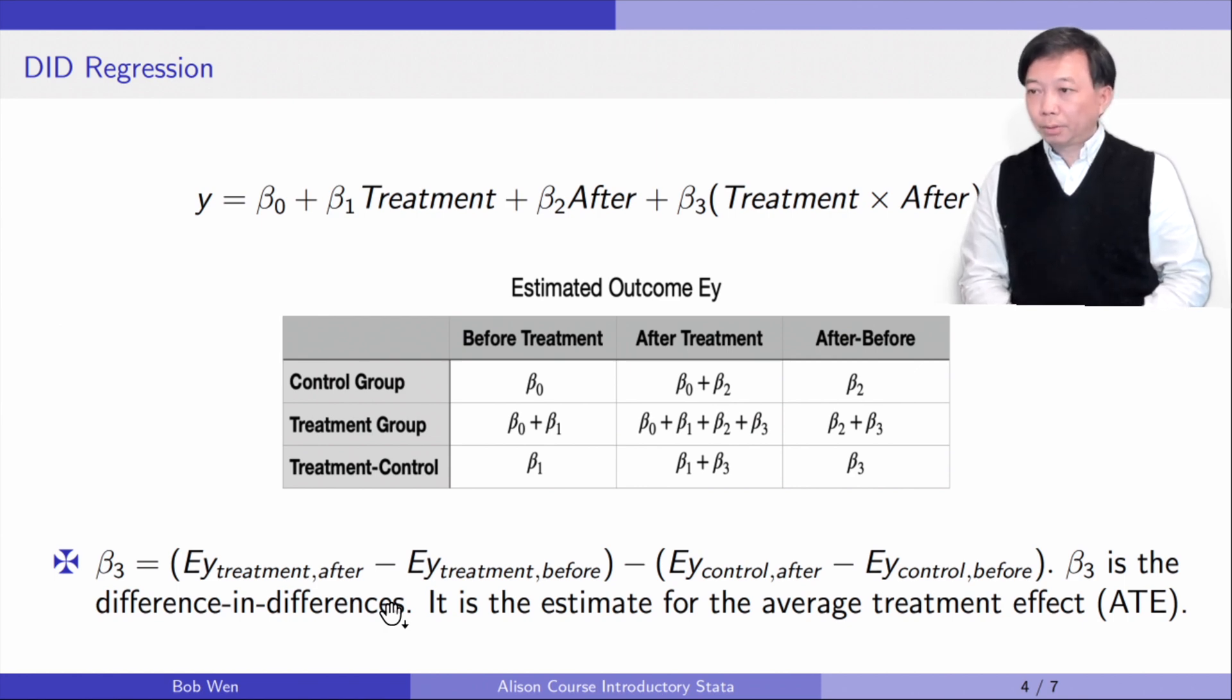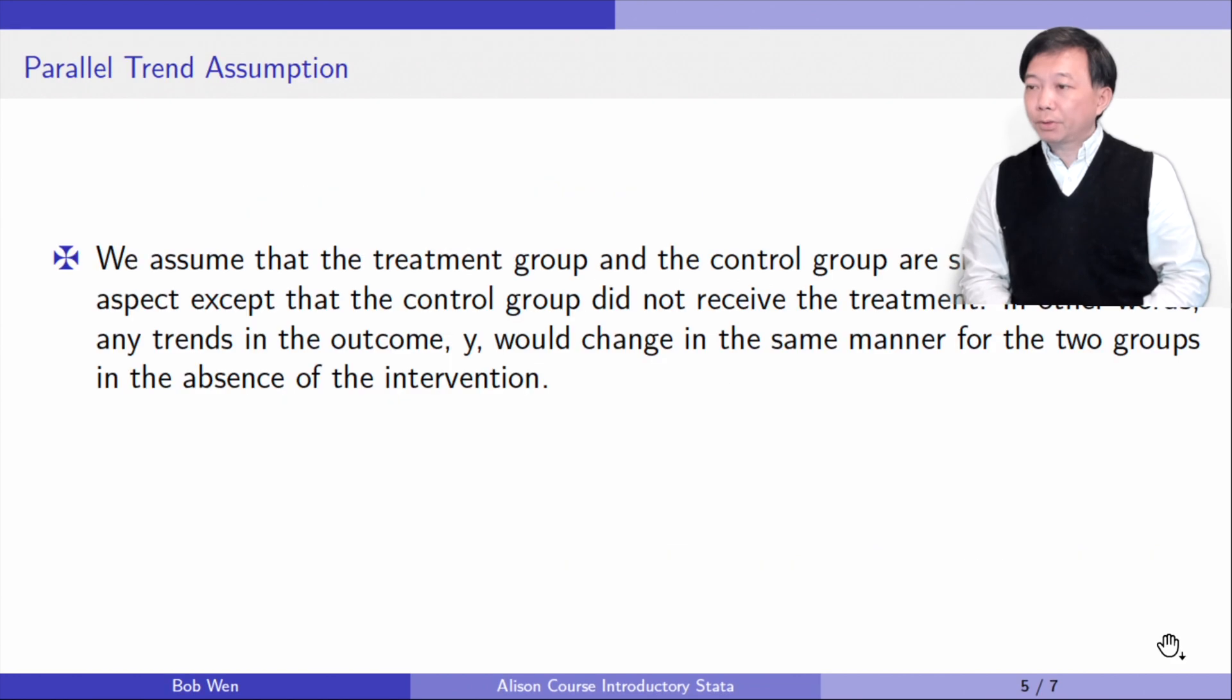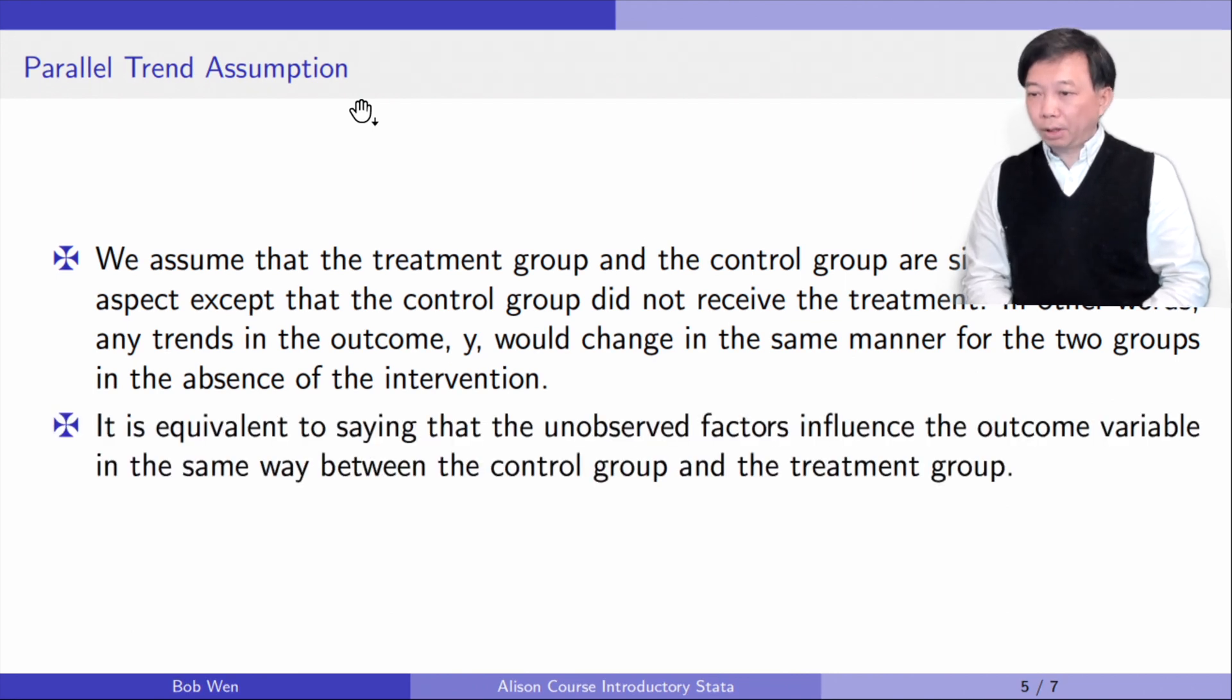A crucial assumption for unbiased difference in difference estimates is the parallel trend assumption. We assume that the treatment group and the control group are similar in every aspect except that the treatment group did not receive the treatment. In other words, any trends in the outcome Y would change in the same manner for the two groups of people in the absence of the treatment. It is equivalent to saying that the unobserved factors impact the outcome variable in the same way between the control group and the treatment group.